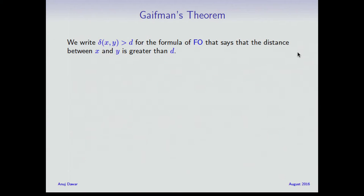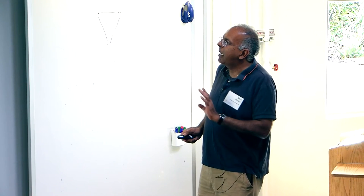Another locality theorem very commonly used — and in tomorrow's lecture we'll be looking at some uses of this — is Gaifman's theorem, which is in some sense stronger in that you can derive the Hanf version from it. In Hanf's theorem you look at neighborhoods of points and their isomorphism types. Gaifman's theorem instead looks at what first-order formulas are true in the neighborhood. Let me state the theorem. In first-order logic, you can write down a formula with two free variables x and y which says that the distance between x and y is greater than d. I write δ(x,y) > d as shorthand for that formula.